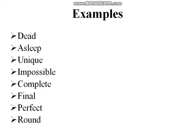For example, we cannot say 'he is the more dead person' or 'he is the most dead person' — if someone dies, they just completely die, so we simply say 'this person is dead'. Similarly, if someone is asleep, we say 'he is asleep' — we cannot say 'he is more asleep'. Same with unique, impossible, complete, final, perfect, and round — we cannot say 'this thing is more round than that one'.